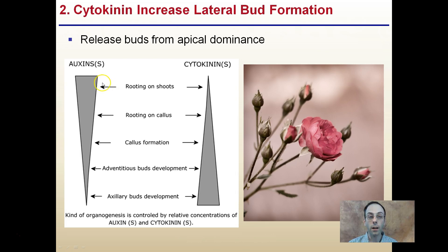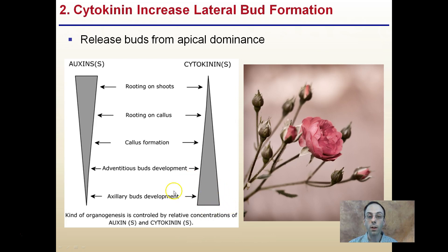When auxins are in high concentration, we see rooting on shoots and root callus forming. As auxin levels decrease and cytokinin levels increase, we see axillary buds developing. So cytokinins are responsible for lateral bud formation — evidence that cytokinins are in higher proportion than auxins, since auxins favor apical dominance. This is another example of how two hormones interact with one another.